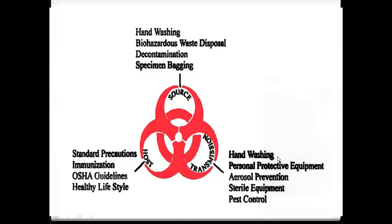Here is the biohazard sign — the three loops represent how we protect ourselves. For the source, we protect by hand washing, proper disposal of biohazardous waste, decontamination such as a 1-to-10 bleach solution, and specimen bagging — such as the biohazard bags we put specimens in after collecting.